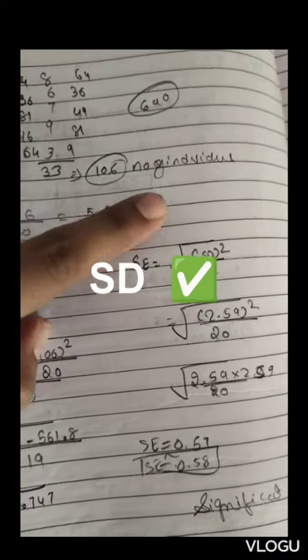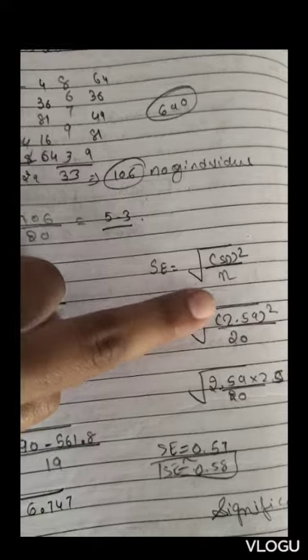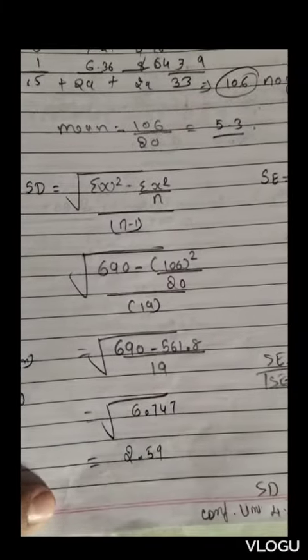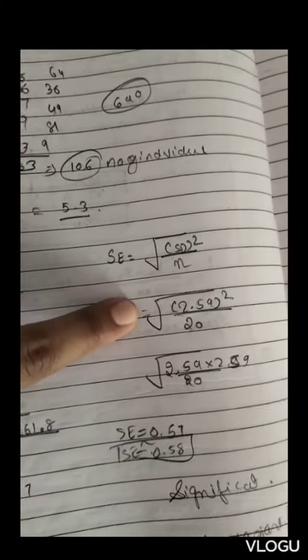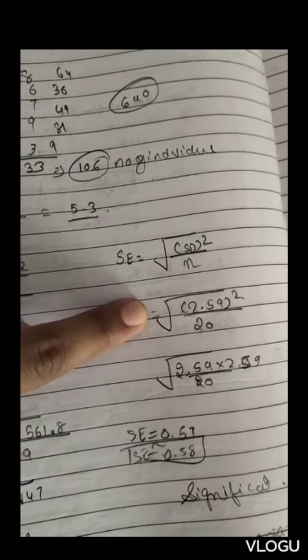For standard error of the mean, the formula is standard deviation squared divided by n. So 2.59 squared divided by 20 gives approximately 0.58.